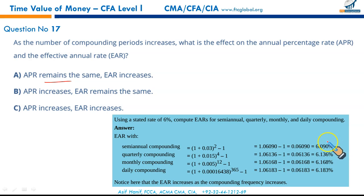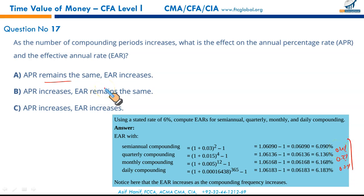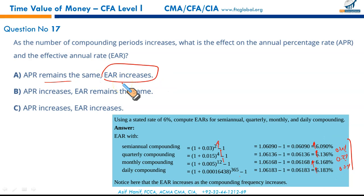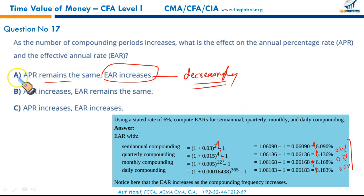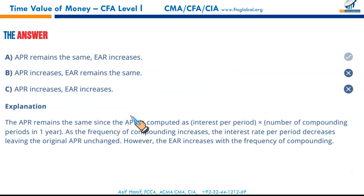However, the EAR increases decreasingly — the first increase was about 0.4%, then 0.3%, then 0.2%. So it is increasing at a decreasing rate. In this case A is the right answer — makes A the correct option.